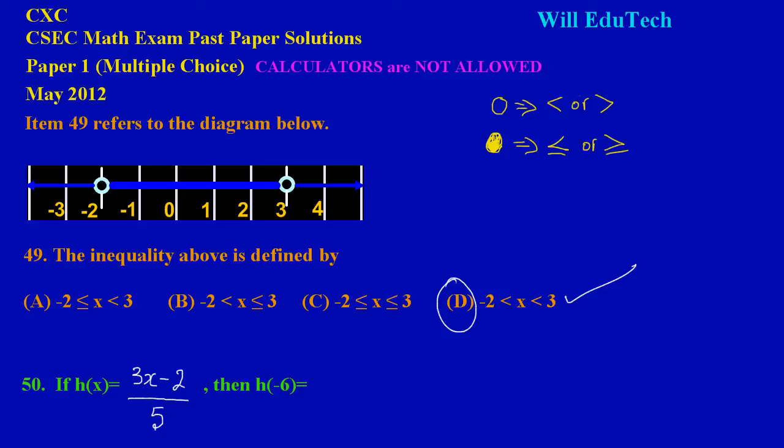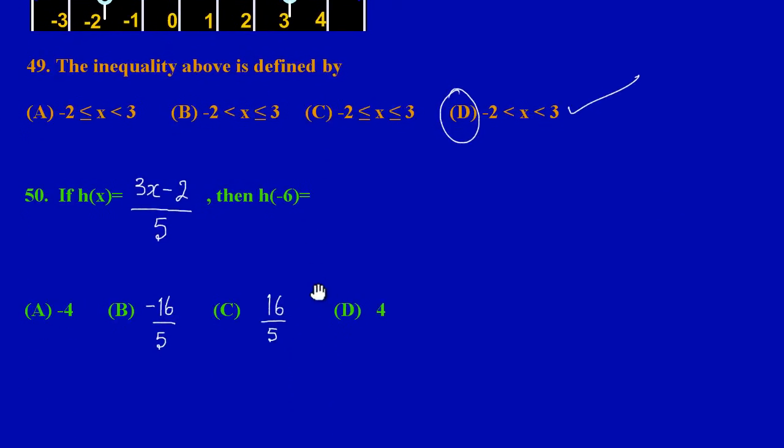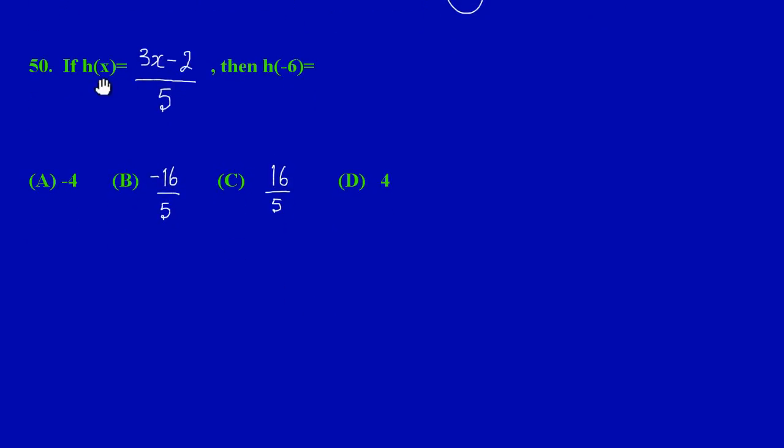Now let's move on to question 50. In question 50 it states that if h(x) = (3x - 2)/5, then h(-6) is equal to what? This is pretty easy my friends, and this is basically substitution. They gave us the function h(x) = (3x - 2)/5.